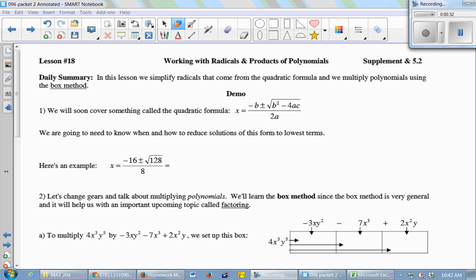Here's an example. I've got negative 16 plus or minus the square root of 128 all over 8. And I'd like to simplify that. So we've been working on simplifying radicals. That's what we did on Monday. If I was going to try to simplify the square root of 128, I would run through my head all the perfect squares and ask myself if any of them divide into 128.